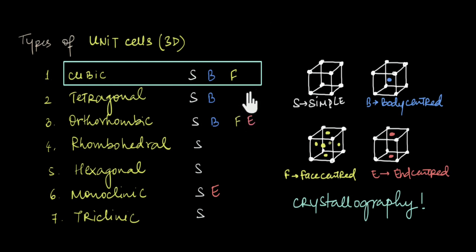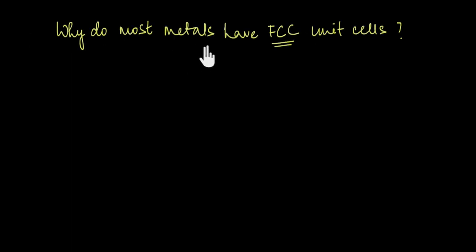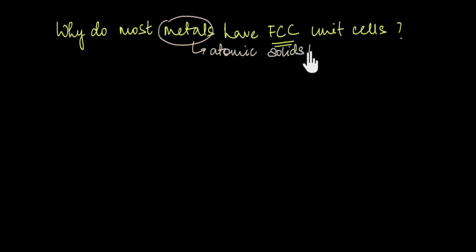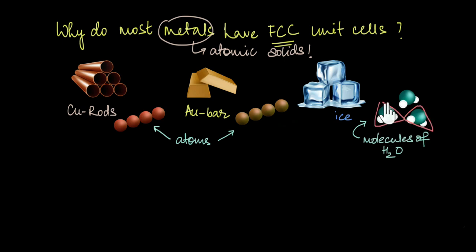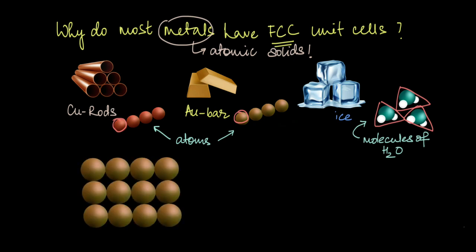The main motivation behind choosing cubic is that most metals have unit cells in the form of cubes, especially the face-centered cubic. To answer why most metals are FCC, we have to remember that metals are atomic solids — the constituent particles of metals are atoms. Copper rods are simply made of copper atoms and gold bars of gold atoms, unlike molecular solids like ice which are made of H₂O molecules. Atoms of most metals can simply be thought of as spheres.